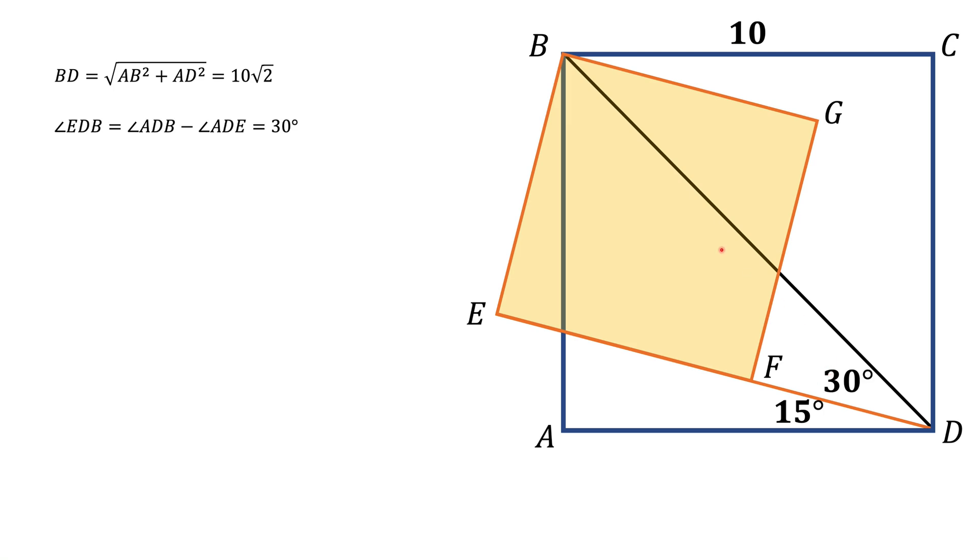Now look at triangle BED. This is a right triangle. The angle is 90 degrees. It has a 30 degree angle. That means the other angle is 60 degrees, and we are dealing with a 30-60-90 degree triangle.